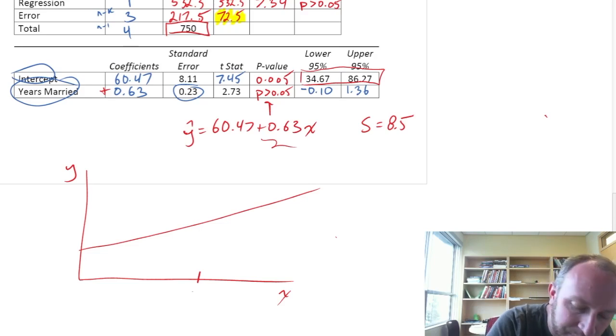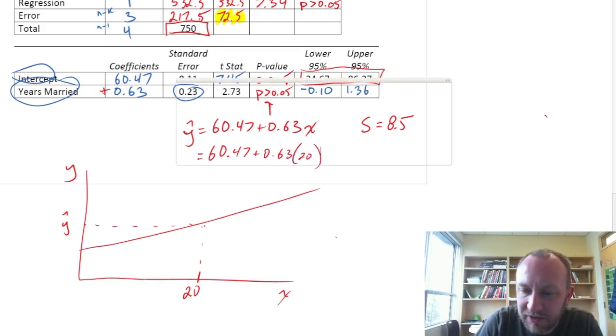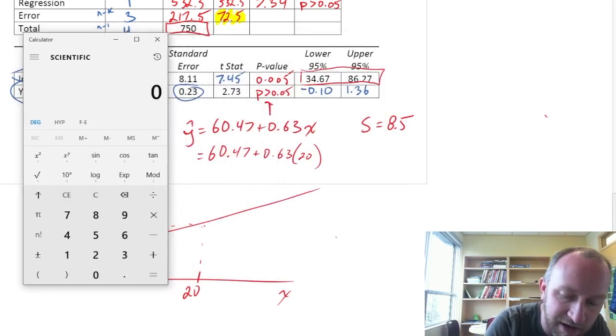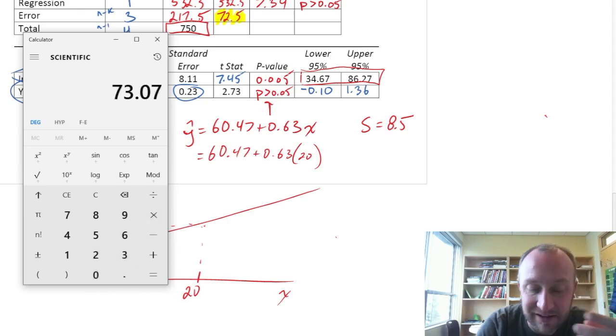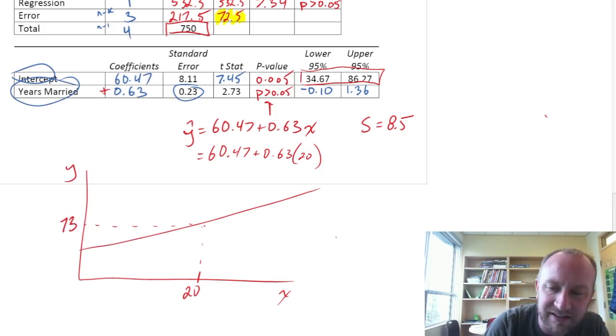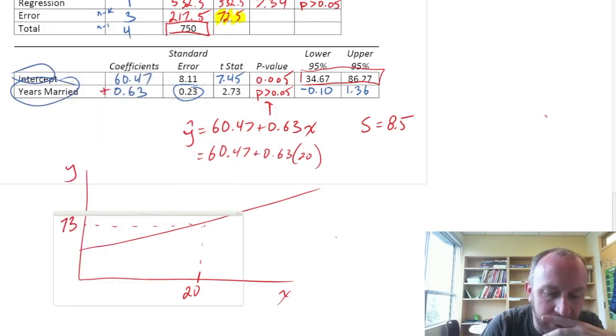So what we're going to be looking at, we have our estimated regression equation. We need to calculate what is our point estimate of the level of happiness of a couple who have been married for 20 years. So we need that point estimate. And so this is going to be 60.47, 0.63 times 20. And so we can find out what that point estimate is. The happiness index that corresponds with somebody who's been married for 20 years, 60.47 plus 0.63 times 20. So that's 73.07 on that index. Let's just keep it at 73.1.